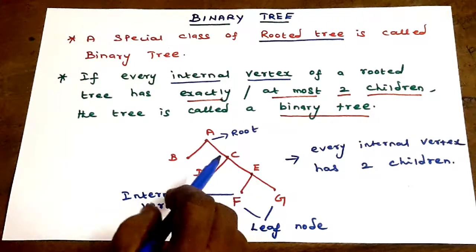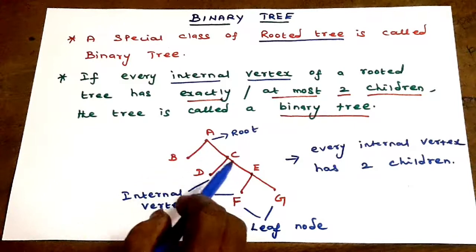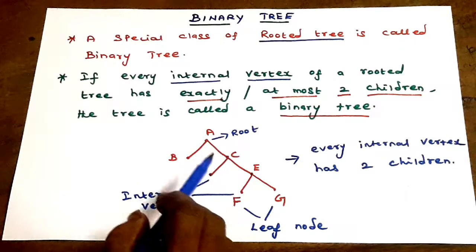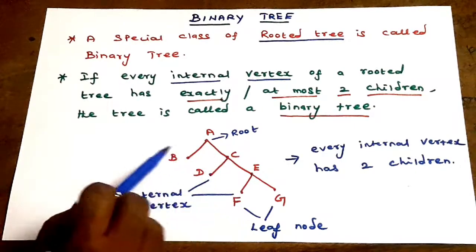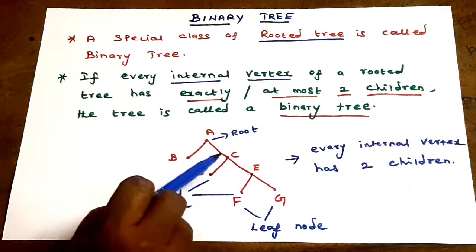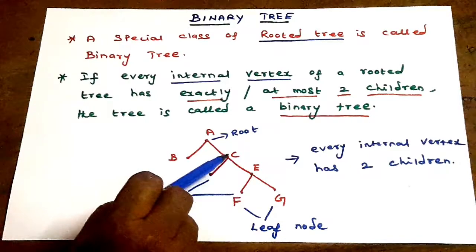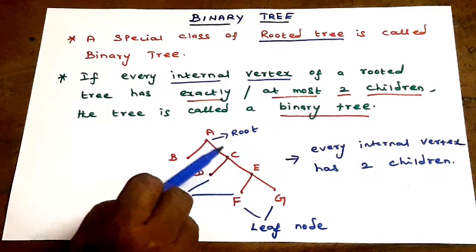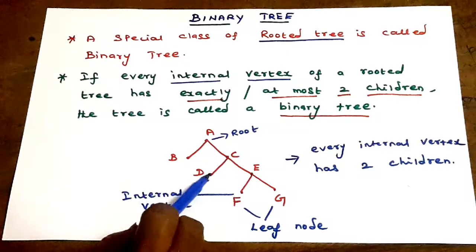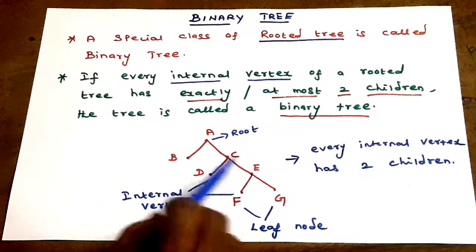In a binary tree, each internal vertex has exactly or at most two children. For example, internal vertex B has two children, and vertex E also has children.